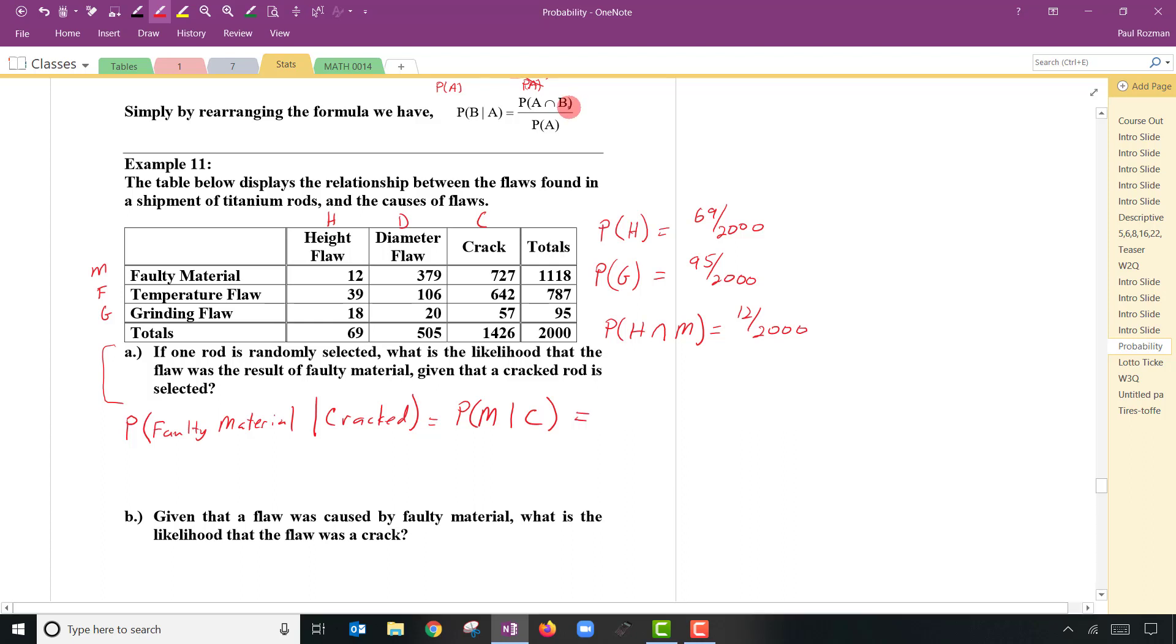I'll write that as M given C. We can apply our formula up above. It has a format of B given A. So we'll follow that same order then. We'll say that this is the probability of C and M divided by the probability of C. And exactly, I'm just replacing the M is my B and the C is my A in our equation. After you do one of these using the equation, you'll see that you may not need to use the equation each time. These are somewhat intuitive after you do a few.